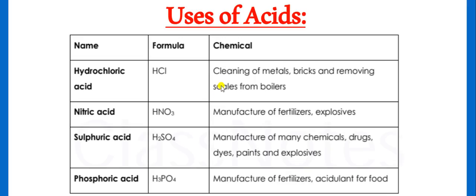Here are some uses of acids. For example, HCl is cleansing of metals, bricks and removing of scales from boilers. Nitric acid is fertilizers and explosives.